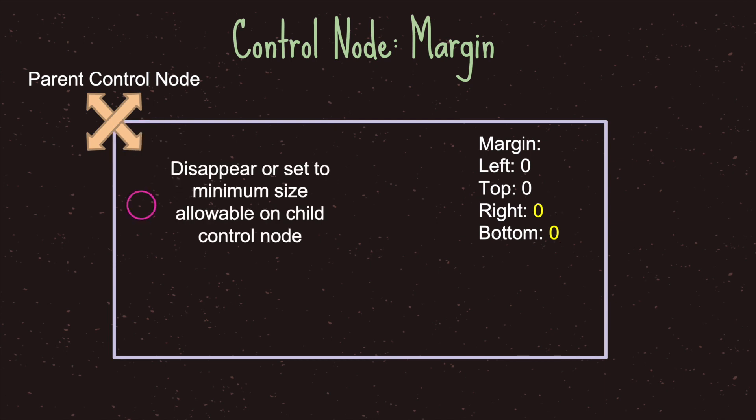If we were to set all margin values to zero, one of two things will happen: either our control node disappears, or it will set itself to the minimum size allowable. Since the example is a button, the button has a minimum size — I believe around 12 by 12. The button will not disappear, but setting margin to all zeros will set it to the minimum size possible for the button control node.